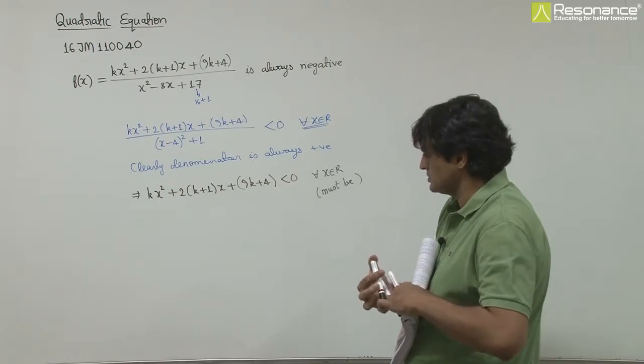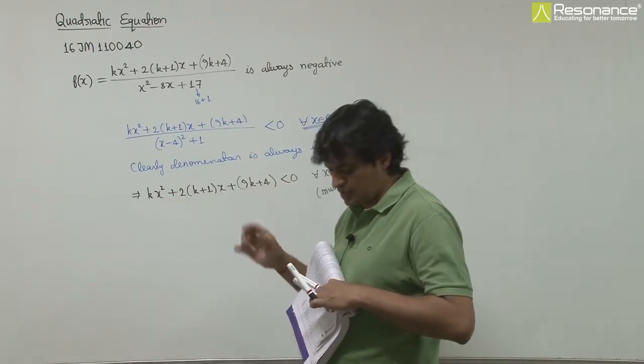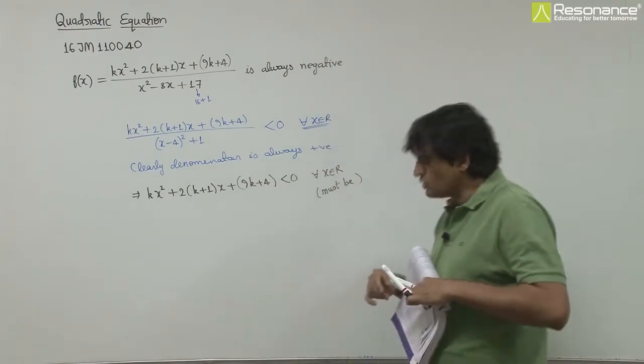If we have k equal to 0, then we have 2x + 4 less than 0. This is not always negative, and if we have k not equal to 0.